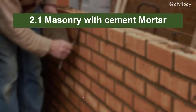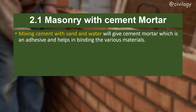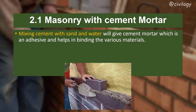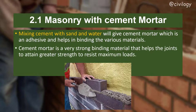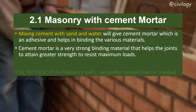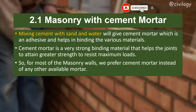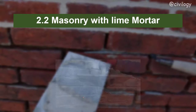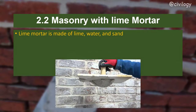Masonry with cement mortar: mixing cement with sand and water produces cement mortar, which is an adhesive that binds various materials together. Cement mortar is a very strong binding material that helps joints attain greater strength to resist maximum loads. For masonry walls, cement mortar is preferred over other available mortars.